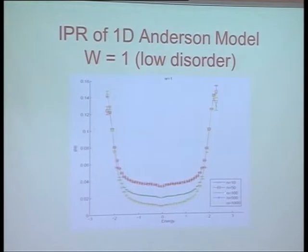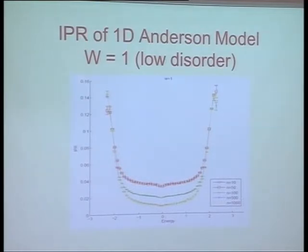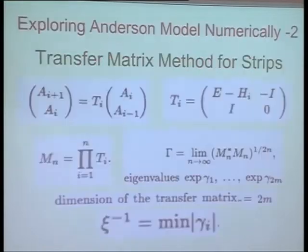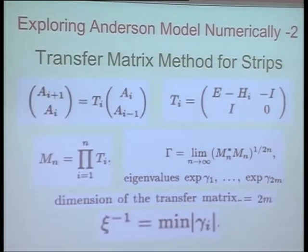You really need big system sizes like 500 or 1,000 to converge the data. Notice that 500 and 1,000 are sitting on top of each other, but 100 is different, and so is 50. Another way of looking at the Anderson model is to use transfer matrix methods, where you calculate the amplitude of the wave function on site i+1 from the amplitude on the previous two sites using a transfer matrix.